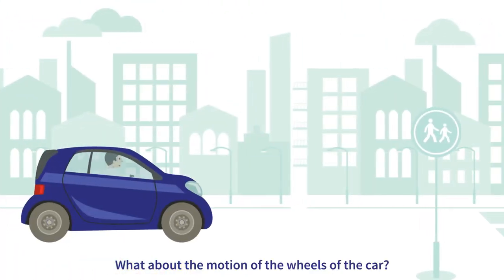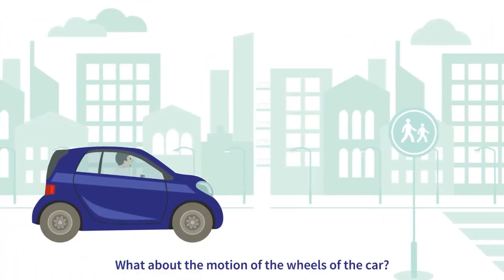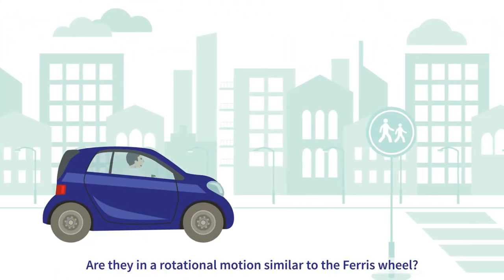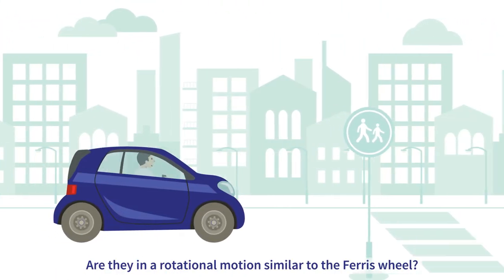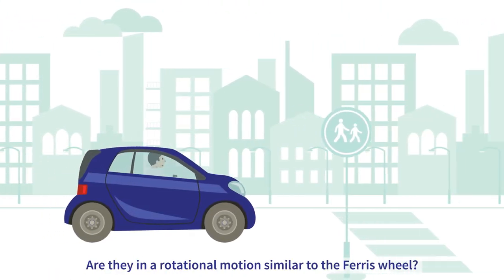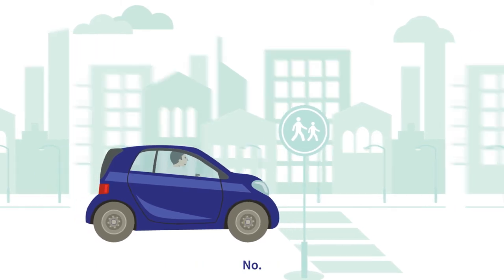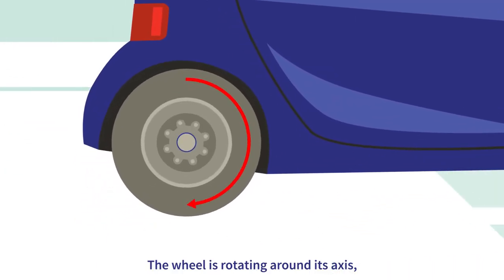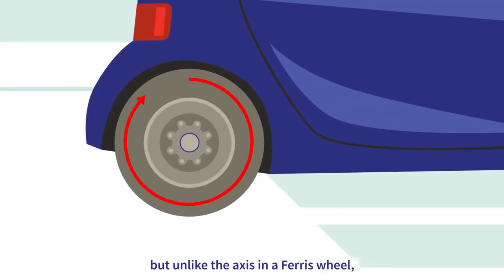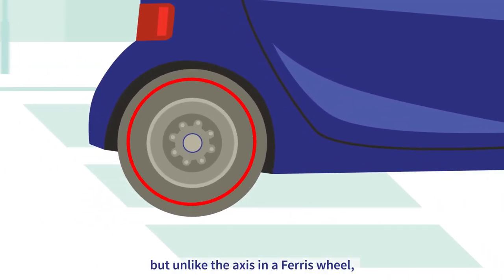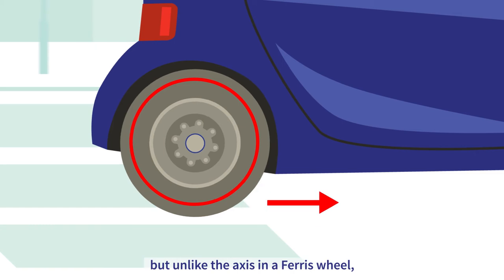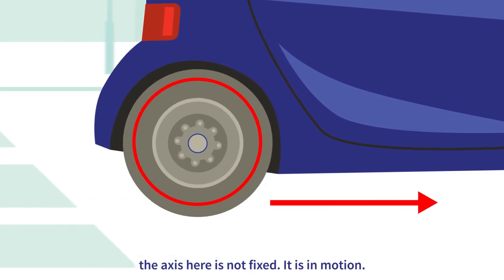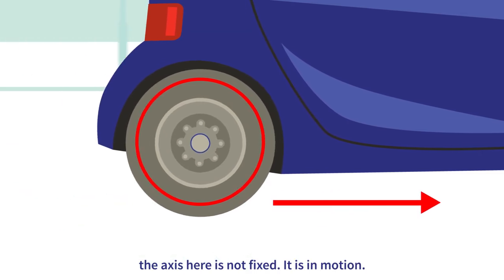What about the motion of the wheels of the car? Are they in a rotational motion similar to the ferris wheel? No — the wheel is rotating around its axis, but unlike the axis in a ferris wheel, the axis here is not fixed; it is in motion.